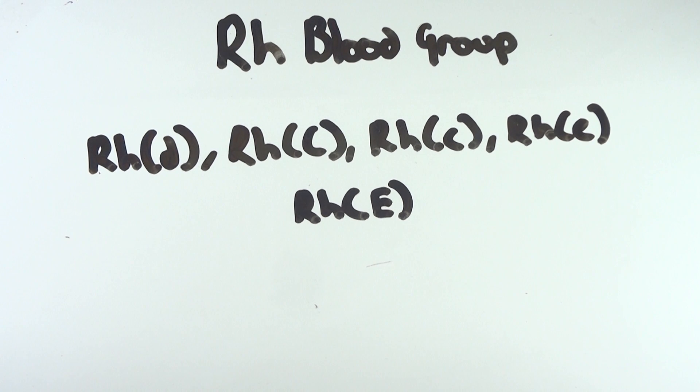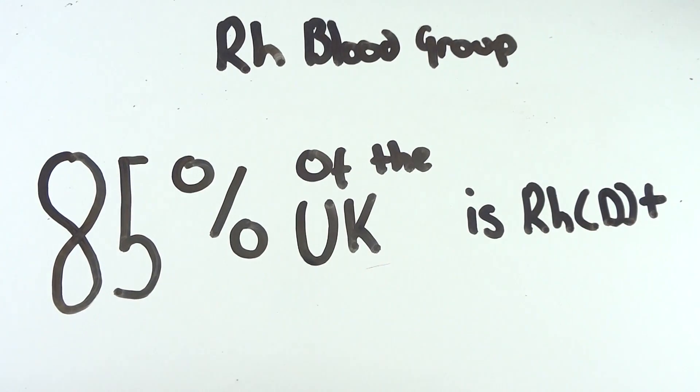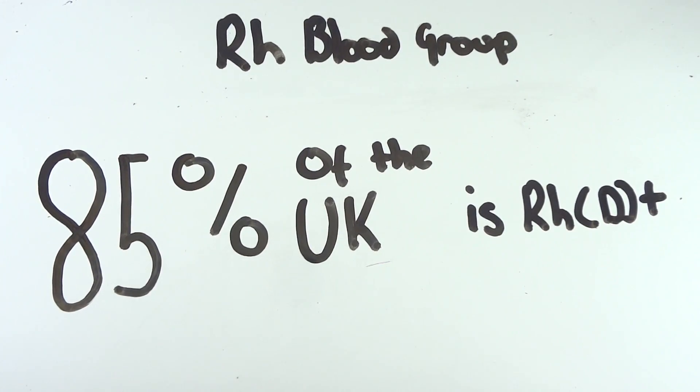D, C, c, E and e are the most important out of the 50, but we tend to only refer to the D antigen due to it being the most likely to initiate an immune system response. About 85% of the United Kingdom is RHD positive, meaning that the RHD antigen is present on their red blood cells.